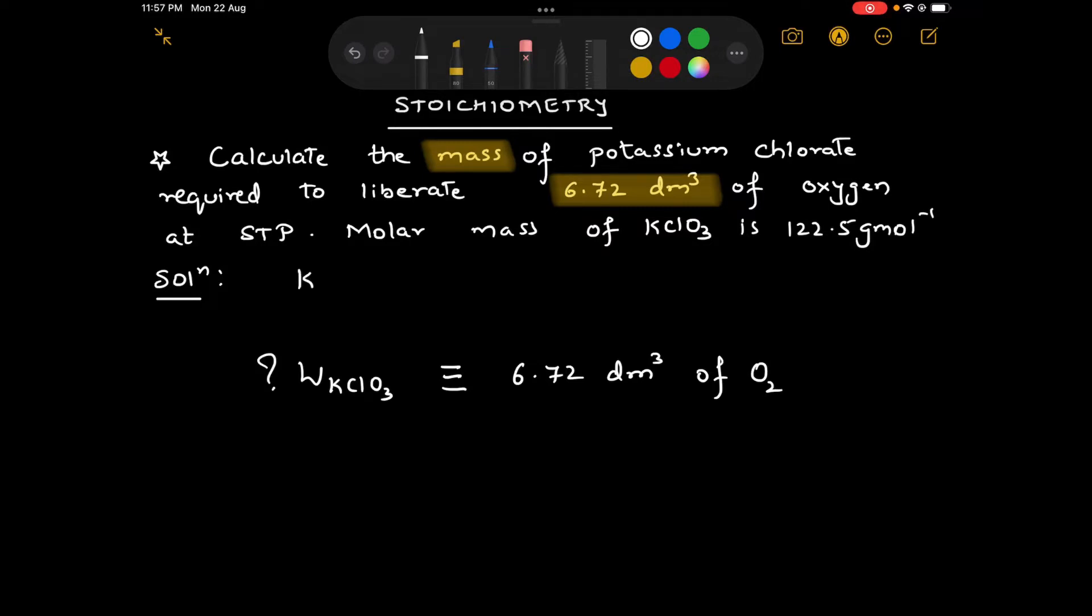The first thing we need to do is write down the balanced chemical equation. KClO3 is liberating oxygen gas, so the other product has to be KCl.